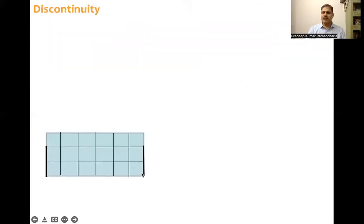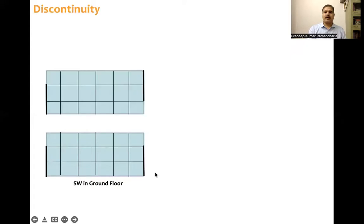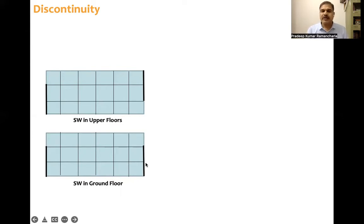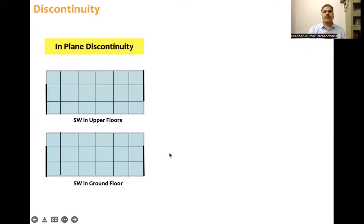Now let's look at this general plan where moment resisting frames are there and two structural walls are at the extreme ends. This is the ground floor structural wall, and above it you can see all upper floors. On the left side the structural wall continues to the top, but on the right side there is an offset of one bay length. Consider bay length as 5 meters — so 5 meters offset out of 10 meters total length means 50% offset. This qualifies as in-plane discontinuity.